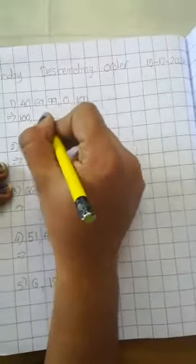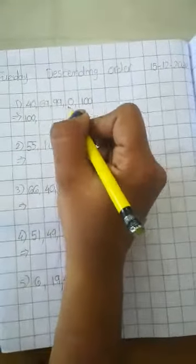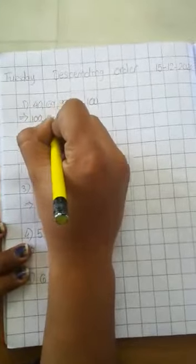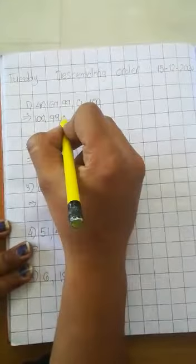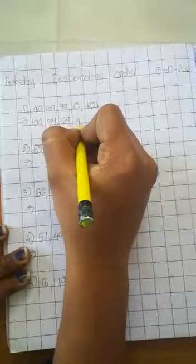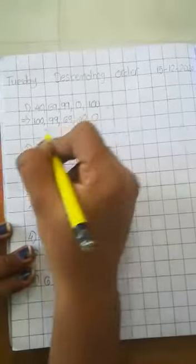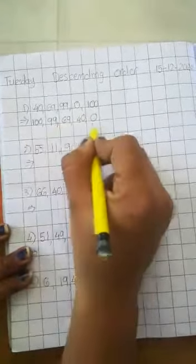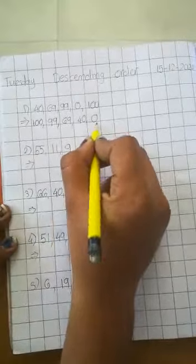Okay, 100 before which number comes in small? 99. Okay, 99 before? 69. 69 before? 40 and 40 before? 0. 100 is bigger number and 0 is small number.